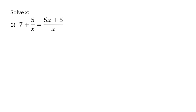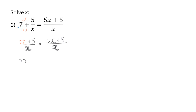In example 3, we now also have variables in the denominator, but our first step is still to get the common denominator, and in this case that denominator will be 1x. So for my first fraction, I still need to multiply the denominator by x, and when I repeat that at the top, I will have 7x. The second fraction is already on x, so the numerator stays the same, and that also applies to the right-hand side. The numerator stays 5x plus 5 because it's already on x. Because our two denominators are now the same, we can say that the numerator on the left is equal to the numerator on the right.